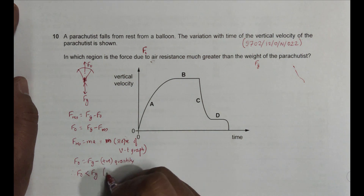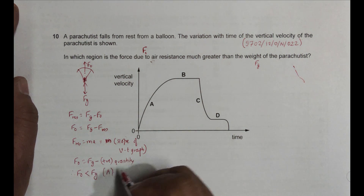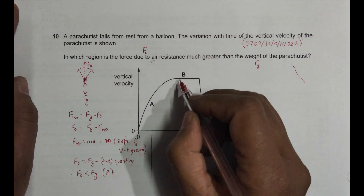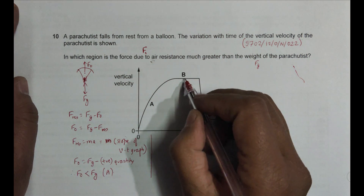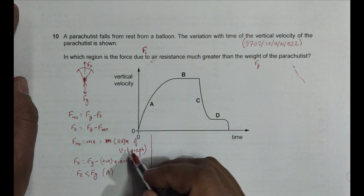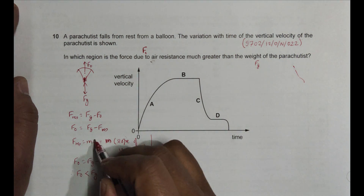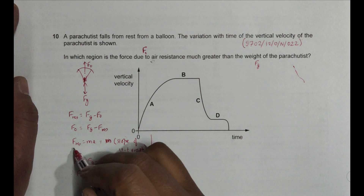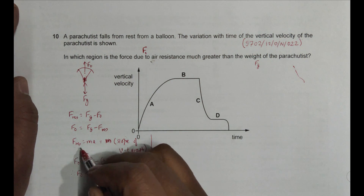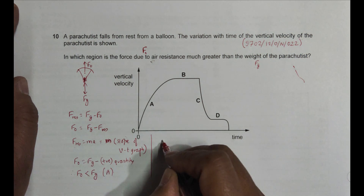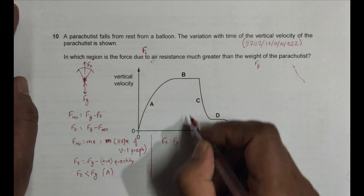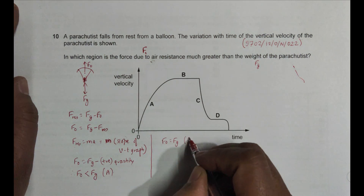In region B, the slope of the VT graph is zero. Slope zero means F resultant equals zero. If F resultant equals zero, then fo equals Fg in region B.